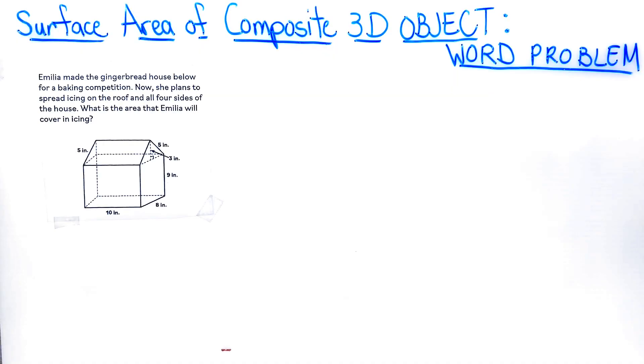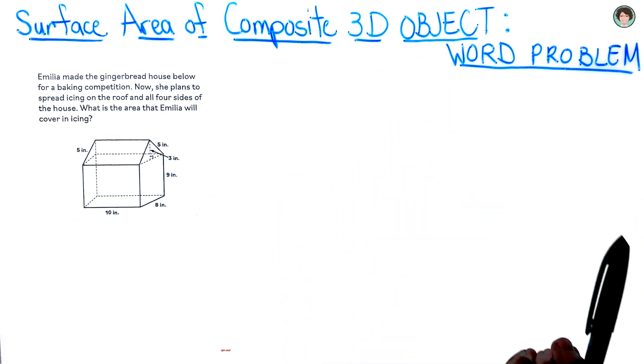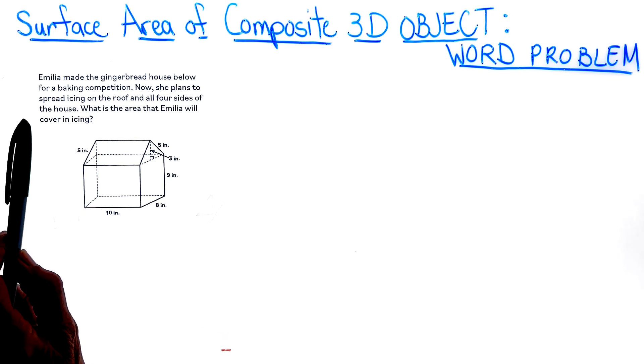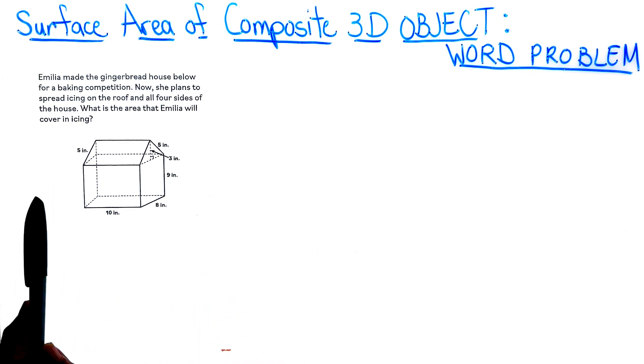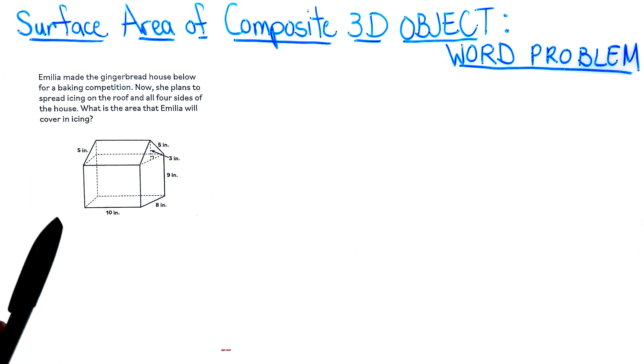This lesson is about surface area of a composite 3D object, and it is a word problem. So let's take a look at what our word problem is going to be. Amelia made the gingerbread house below for a baking competition. Now she plans to spread icing on the roof and all four sides of the house. What is the area that Amelia will cover in icing?